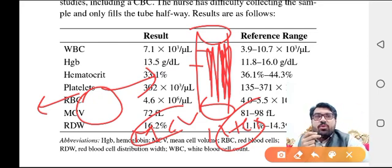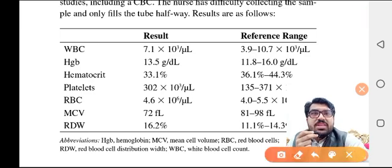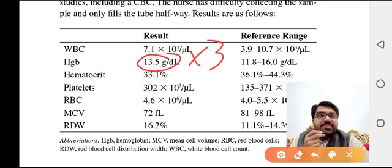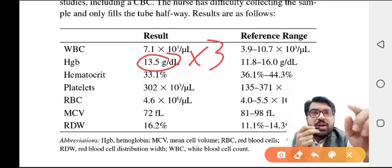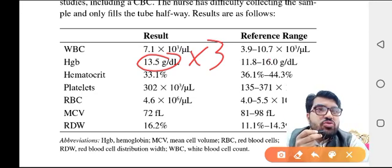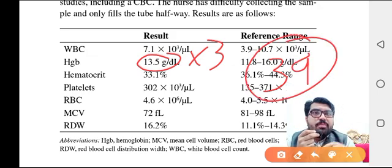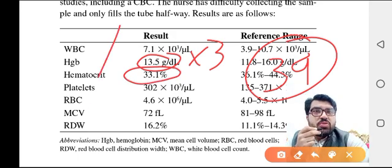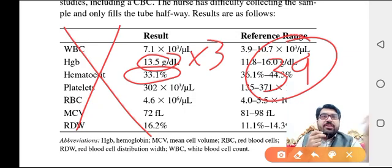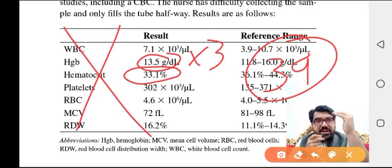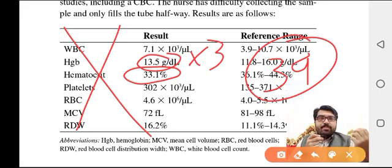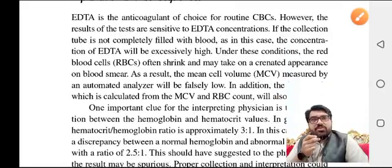How do you check the validity of a CBC — whether the blood was taken up to the mark or not? There is a simple trick: multiply the hemoglobin by three. If that equals the hematocrit, it proves the blood was taken up to the mark. In our example, 13.5 × 3 = 39, but the hematocrit recorded was 33 percent. Since they don't match, the ratio is not 1:3, confirming you must repeat the CBC before ordering any further studies.